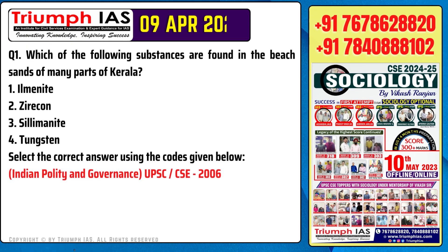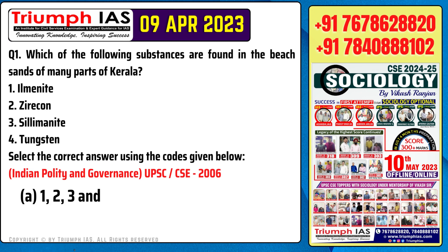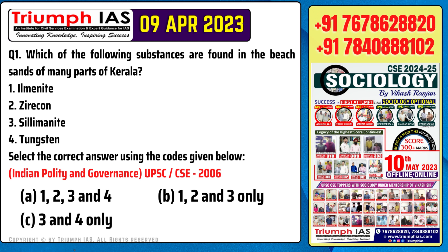Question number 1. Which of the following substances are found in the beach sands of many parts of Kerala? Number 1: Ilmenite. Number 2: Zircon. Number 3: Sillimanite. Number 4: Tungsten. Select the correct answer using the codes given below.